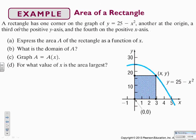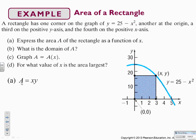Area of a rectangle: a rectangle has one corner on the graph of y equals 25 minus x squared, another at the origin, a third on the positive y-axis, and a fourth on the positive x-axis. Express the area of the rectangle as a function of x — what's the domain, graph it, and for what value of x is the area largest? If you don't have a picture, make sure you draw one. The first thing we want to do is write the area of the rectangle, which is x times y.